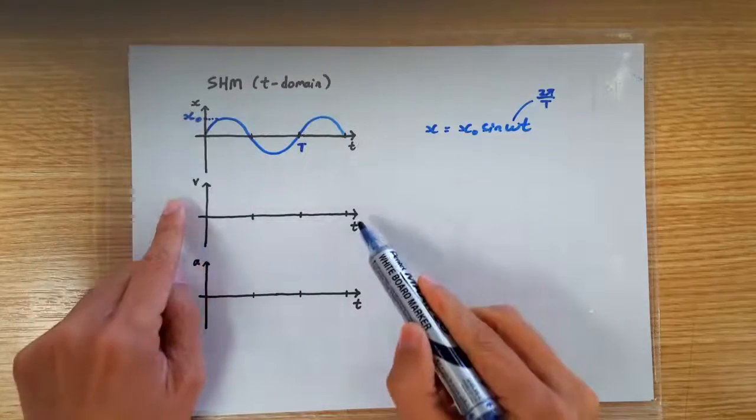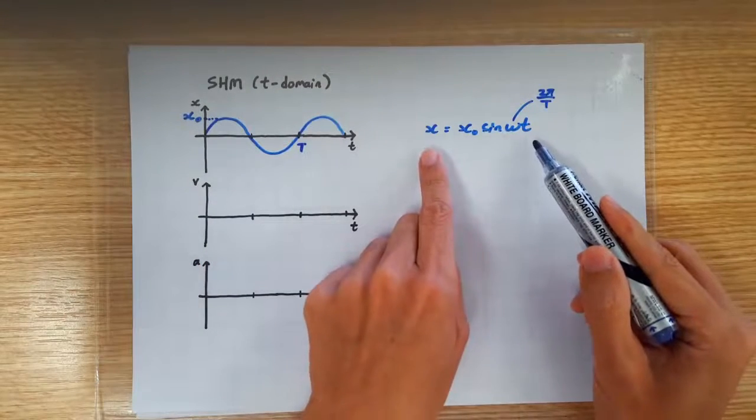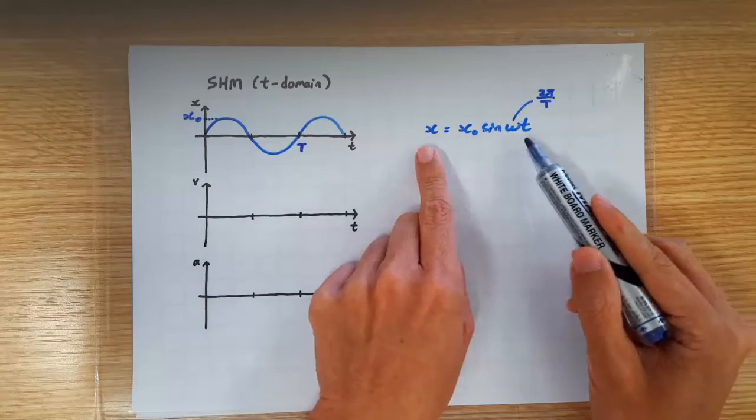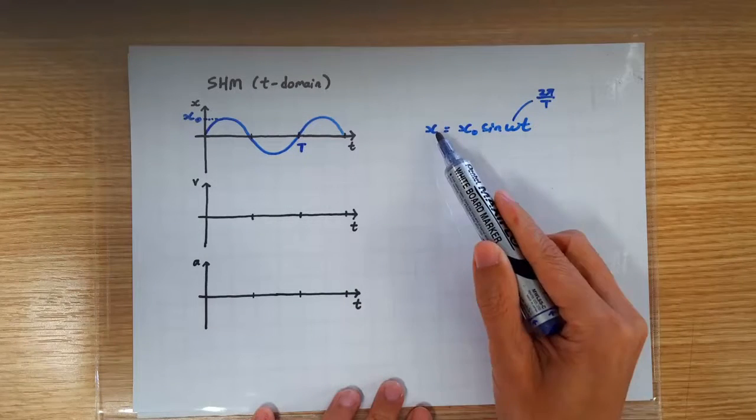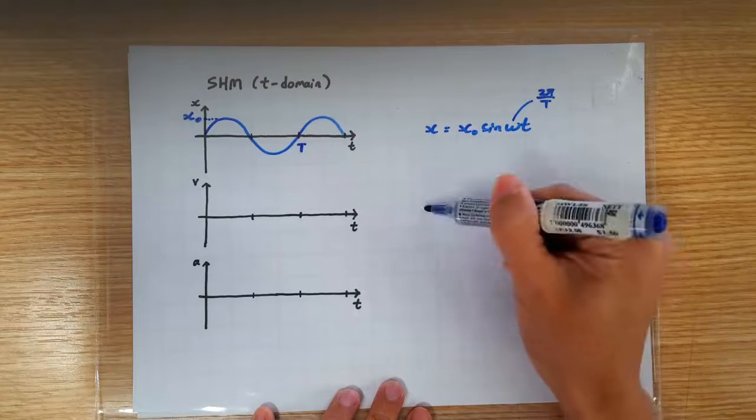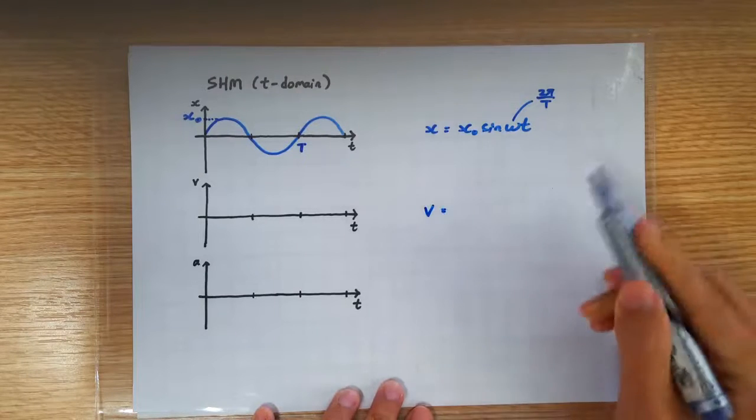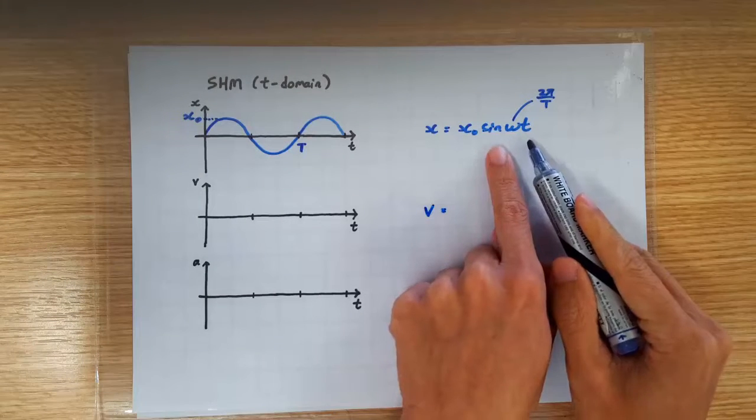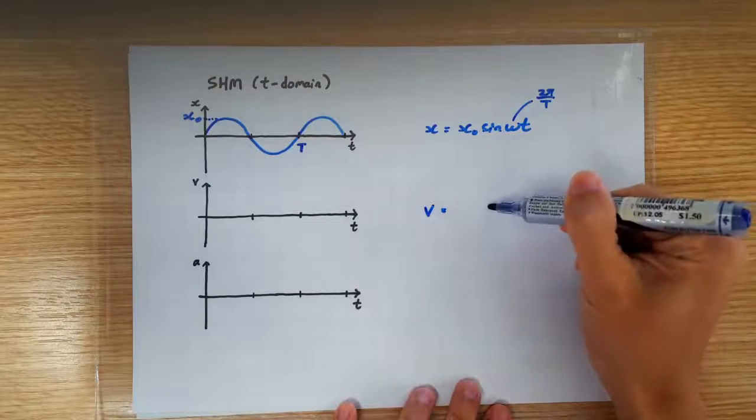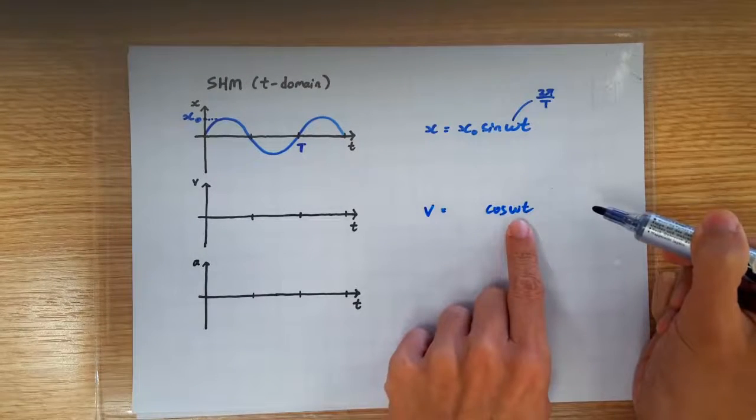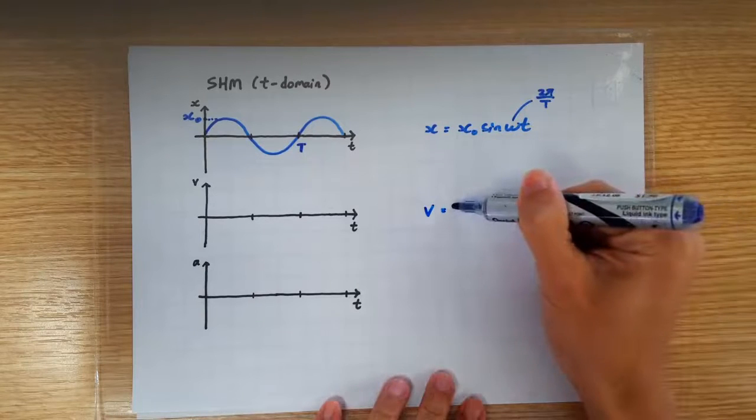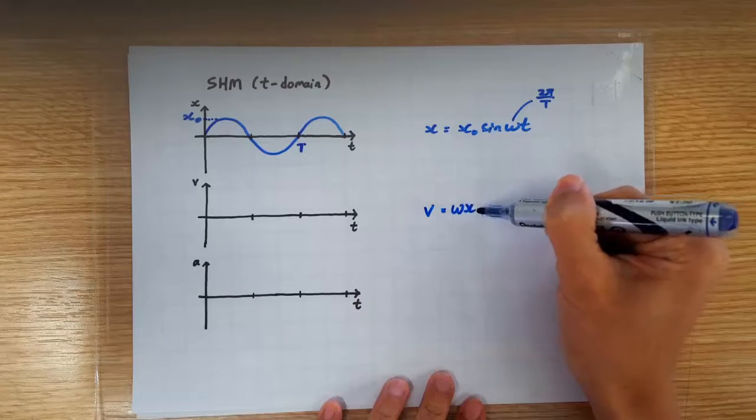To go from the x-t graph to the v-t graph, we're going to differentiate with respect to time this equation. So, on the left-hand side, we get dx/dt, which is, of course, velocity. When we differentiate sin, we get cos, and the omega is going to pop out to give us ωx0.